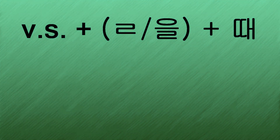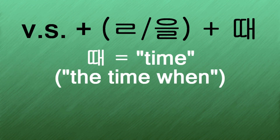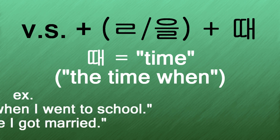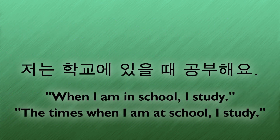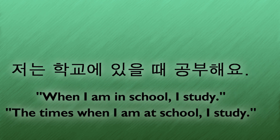So if 면 can mean both 'if' and 'when' hypothetically, how can we tell it apart from the 때 form? Simple! The word 때 actually means 'time' — such as 'the time when,' as in 'the last time when I went to school' or 'the time I got married.' In this sense it also means 'when,' but only when you want to refer to the actual event in time. 저는 학교에 있을 때 공부해요 — 'When I am in school, I study,' or 'The times when I am at school, I study.'